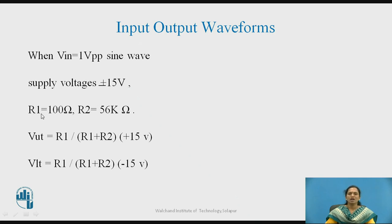Assuming R1 = 100 Ω and R2 = 56 kΩ. At that time, VUT = R1/(R1 + R2) × (+15) and VLT = R1/(R1 + R2) × (−15).